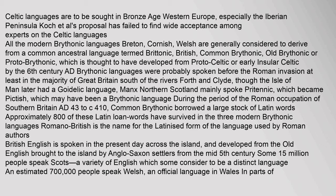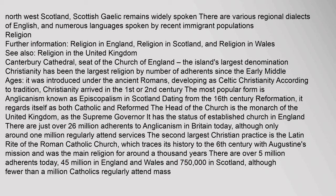Brythonic languages were probably spoken before the Roman invasion at least in the majority of Great Britain south of the rivers Forth and Clyde. Northern Scotland mainly spoke Pritenic, which became Pictish, and may have been a Brythonic language during the period of Roman occupation of southern Britain (AD 43 to c. 410). Common Brythonic borrowed a large stock of Latin words; approximately 800 of these Latin loanwords have survived in the three modern Brythonic languages. British English is spoken across the island today, and developed from the Old English brought to the island by Anglo-Saxon settlers from the mid-5th century. Some 15 million people speak Scots, a variety of English which some consider to be a distinct language. An estimated 700,000 people speak Welsh, an official language in Wales. In parts of north-west Scotland, Scottish Gaelic remains widely spoken.